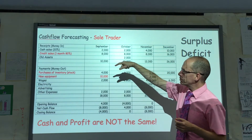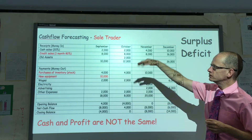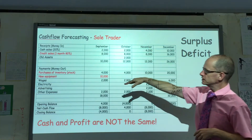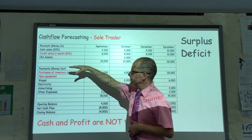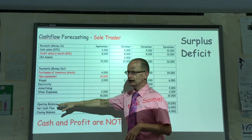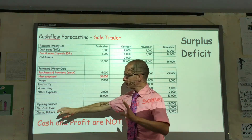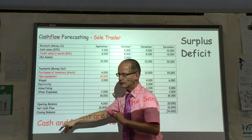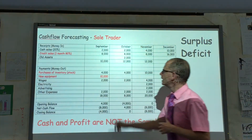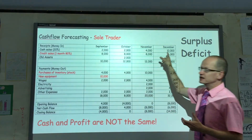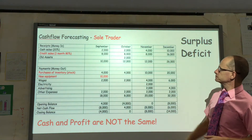On the top what we have are the receipts. Then we have the payments, and then we have the summary at the bottom. And across the top we have the various months.